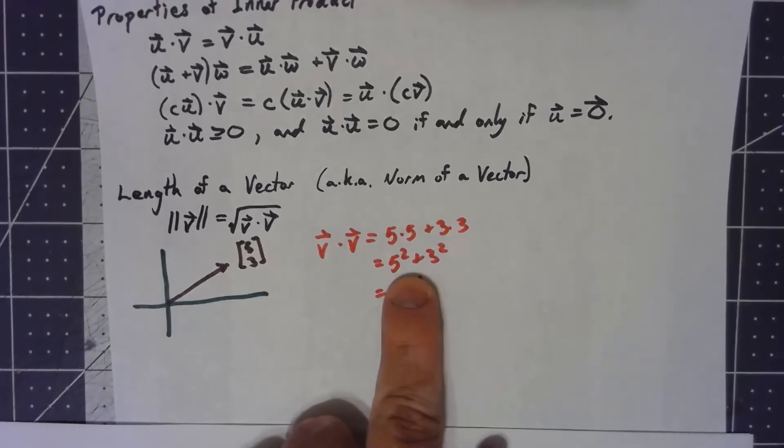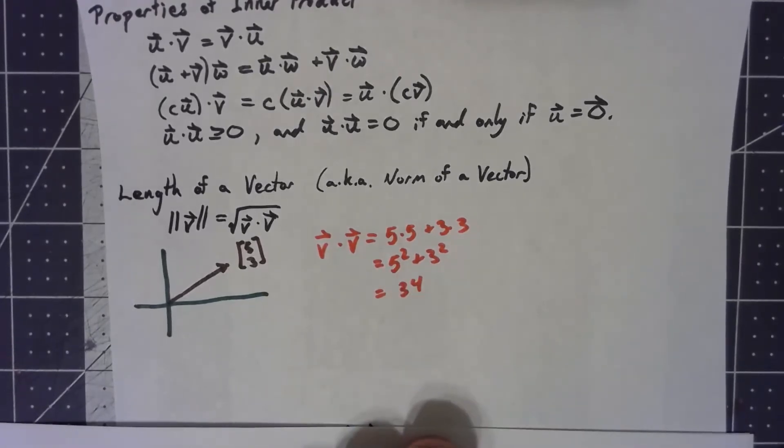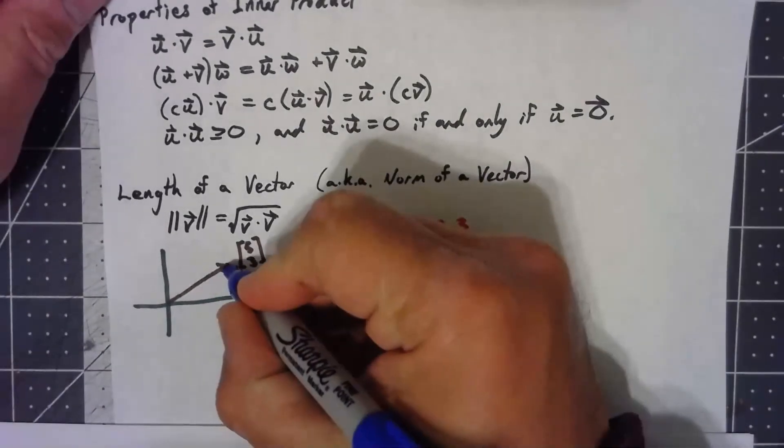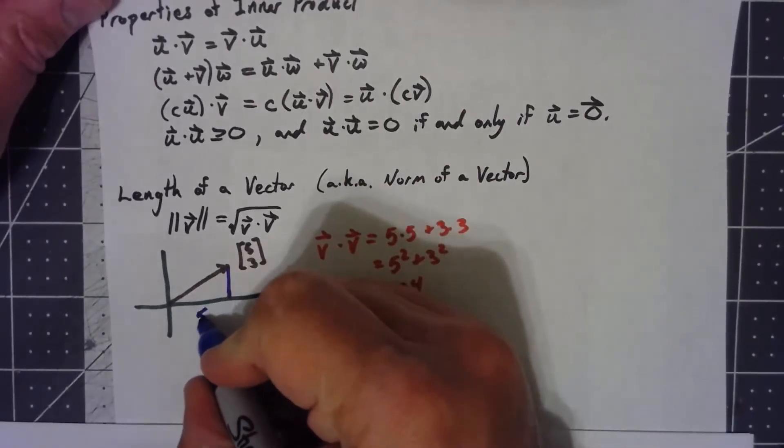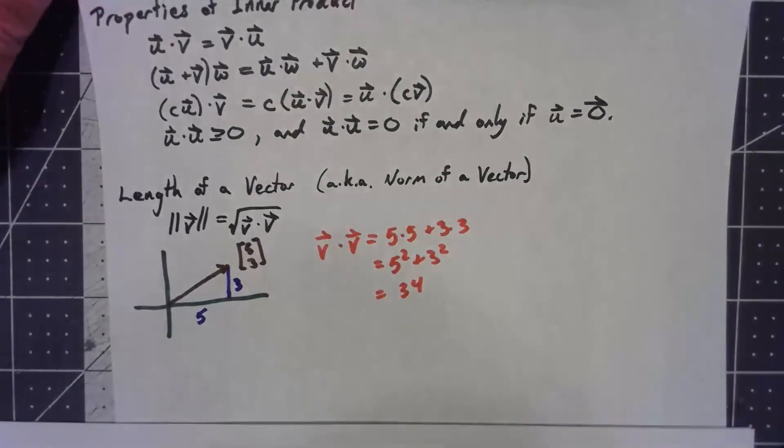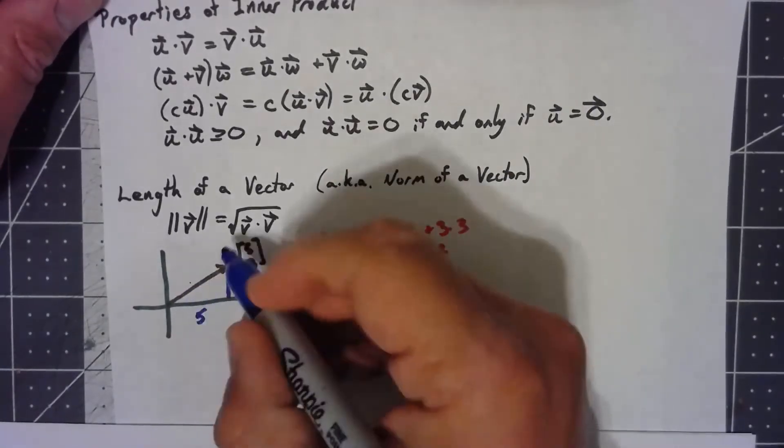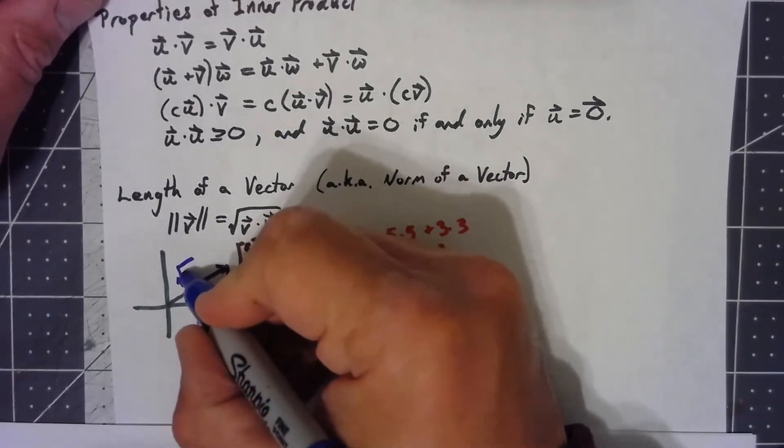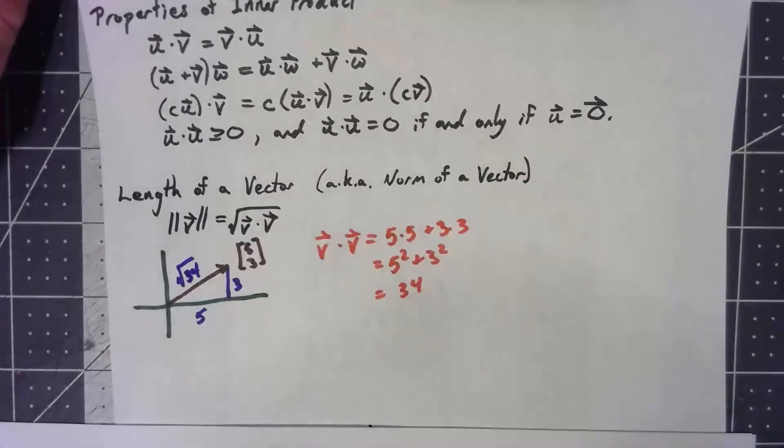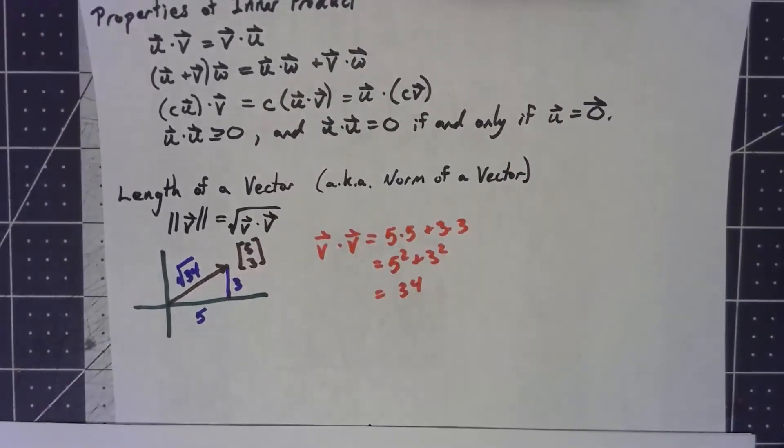I really want to focus on that second one, 5 squared plus 3 squared. Well, that sounds an awful lot like the Pythagorean theorem. In fact, if I kind of make a triangle out of this, this side is length 5, this side is length 3, this side is the square root of a squared plus b squared, is the square root of 34, the square root of 5 squared plus 3 squared.